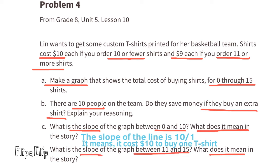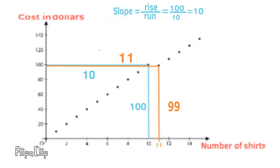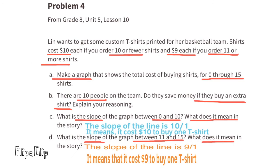D. What is the slope of the graph between 11 and 15? What does it mean in the story? The rise is 99 and the run is 11. That's 99 divided by 11 or 9. The slope in this section of the graph is 9. That means that it costs $9 to buy one t-shirt.